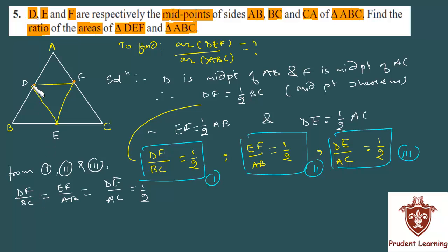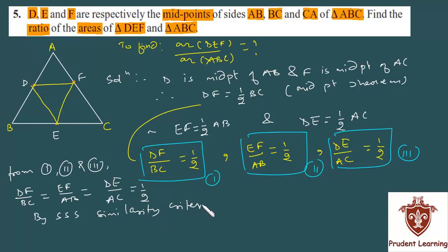DF is one side of the small triangle, corresponding to BC of the big triangle. EF is one side of the small triangle, corresponding to AB. The corresponding sides of the two triangles are in equal ratio. By SSS similarity criterion, triangle DEF is similar to triangle ABC.